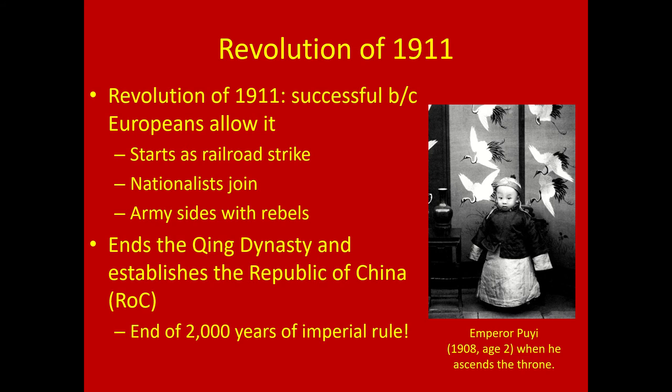Emperor Puyi is toppled at about six years old; he's not killed but basically run into exile. Eventually the Japanese will actually put him in charge of the puppet state of Manchukuo when they invade Manchuria, to have some veneer of Chinese rulership — even though it's going to be a Japanese-controlled area.